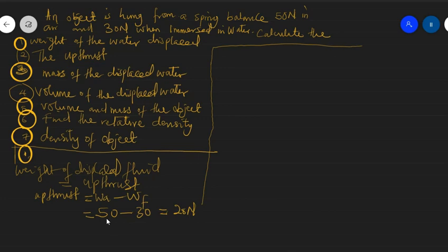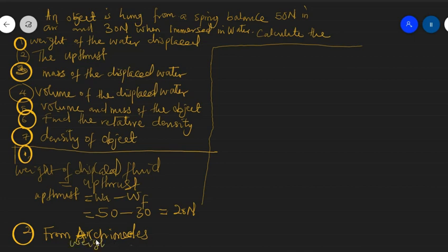At the same time, question two asks for the uptrust. We already found that. From Archimedes' principle, weight of displaced fluid is equal to the uptrust — so uptrust is also 20 newtons. Answering question one effectively helped us answer question two as well.